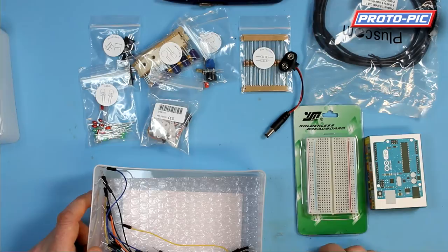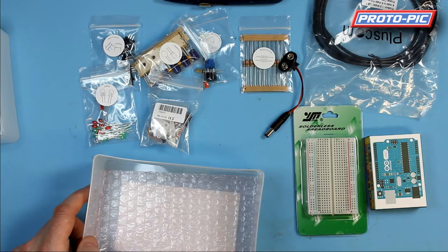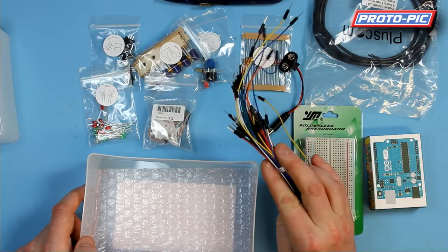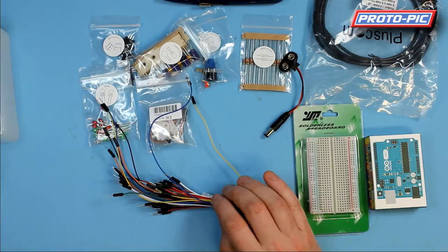You get a breadboard, a half-size breadboard with all the power bus rails clearly marked on the side. And then you get a pack of 70 male-to-male jumper wires. Approximately 70. They come in bundles. I think it's possibly about 65. And therein are a few variations, different sizes and colors.